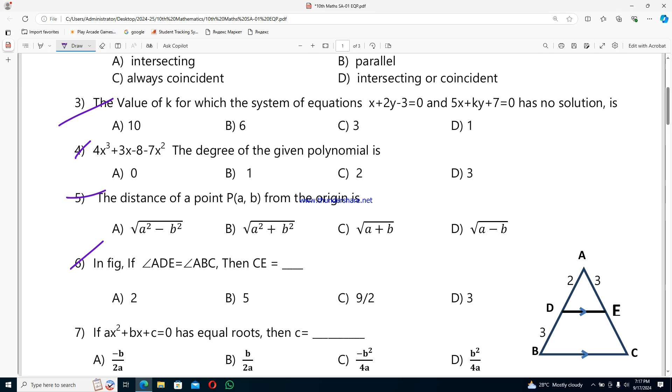Sixth question: in figure, if angle ADE equals angle ABC, then CE equals option A 2, option B 5, option C 9/2, option D 3.